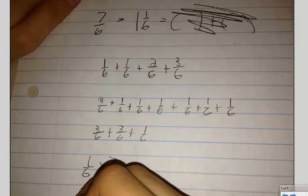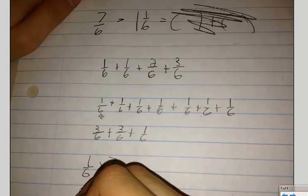So we can take 7 sixths and break it down many ways. And the most common way is to break it down into the unit fraction 1 sixth. So I'm going to add 7 one sixths. From there I can do all sorts of different combinations of adding them together.